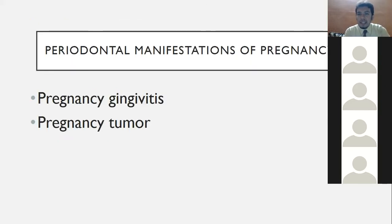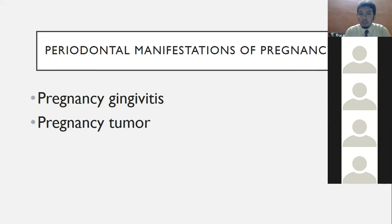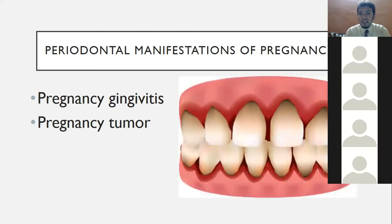Now, the periodontal manifestations of pregnancy: there are two — pregnancy gingivitis and pregnancy tumor. Both are conditioned enlargements. Pregnancy gingivitis is special because it affects only the marginal gingiva — as you can see in the figure, the whole margins are involved. It is a marginal enlargement.